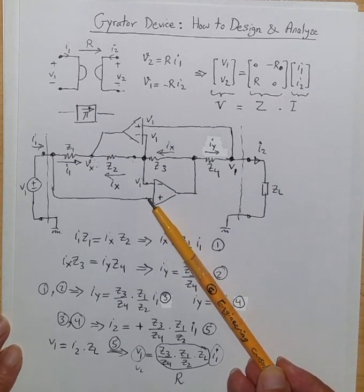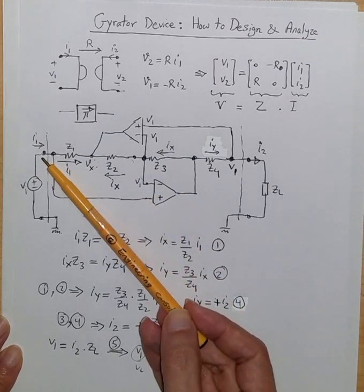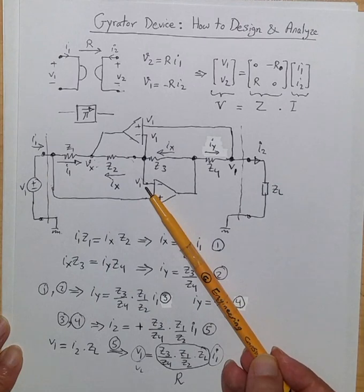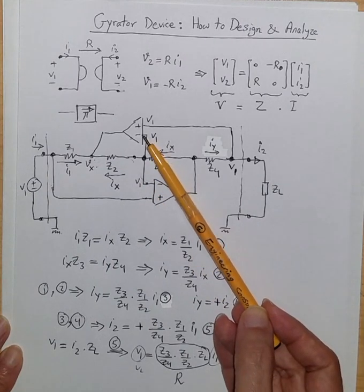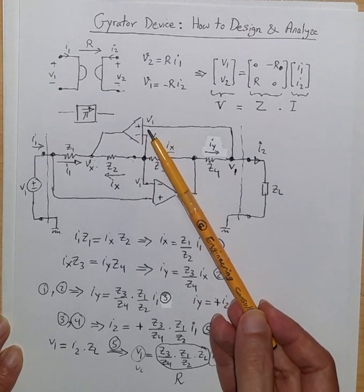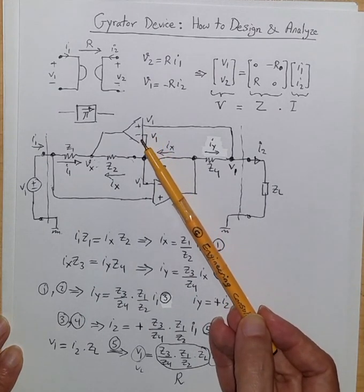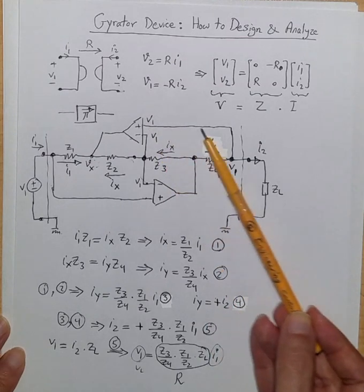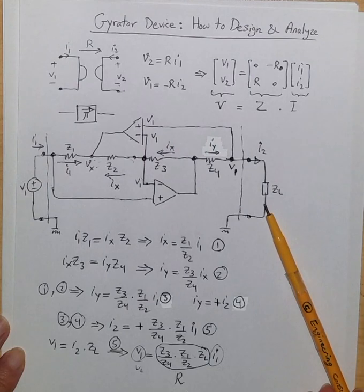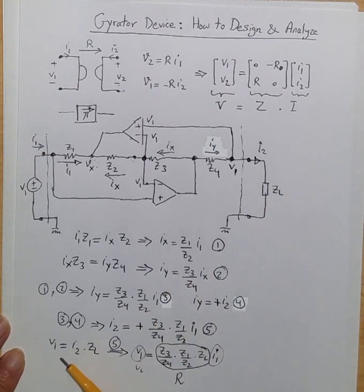So in this case this op-amp is not saturated so voltage of non-inverting terminal should be equal to the voltage of inverting terminal. So if V1 is here then V1 has to be here and V1 is also here because they are connected. So assuming this op-amp is also non-saturated because of virtual short that voltage V1 has to show here and that means that voltage is here right over ZL. So we can immediately write this equation that V1 is equal to I2 times ZL.